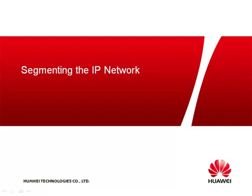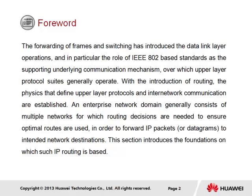This section is segmenting the IP network and introduces the means for communication between IP networks in the enterprise. The forwarding of frames and switching has introduced the data link layer operations, and in particular the role of IEEE 802-based standards as the supporting underlying communication mechanism over which upper layer protocol suites generally operate. With the introduction of routing, the physics that define upper layer protocols and internetwork communication are established. An enterprise network domain generally consists of multiple networks for which routing decisions are needed to ensure optimal routes are used in order to forward IP packets or datagrams to intended network destinations. This section introduces the foundations on which such IP routing is based.